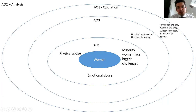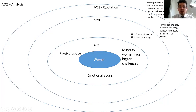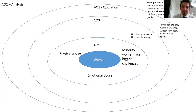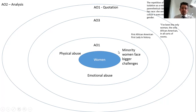Then in the final part — AO2 — that's where you put the analysis. So we could say: the repetition of 'only' implies her extreme isolation as a minority woman, reinforced by the parenthetical clause which shows her focus on her race. She seems to argue that being a person of colour is even more of a limiting factor than her gender. As you can see in that AO2, you've got an integrated literary and linguistic approach, focusing on the repetition and the parenthetical clause.